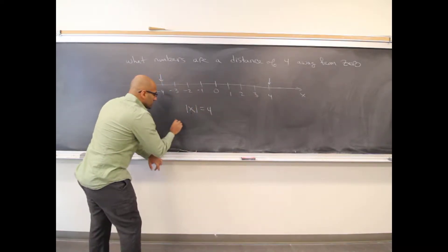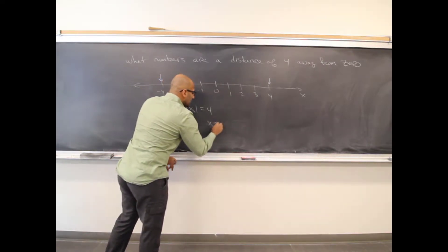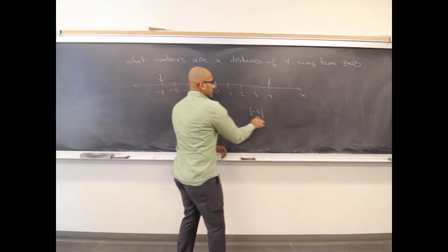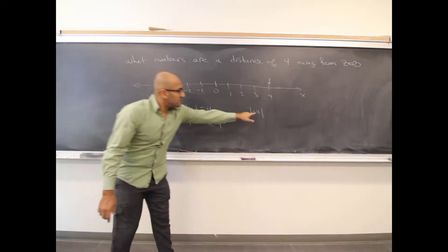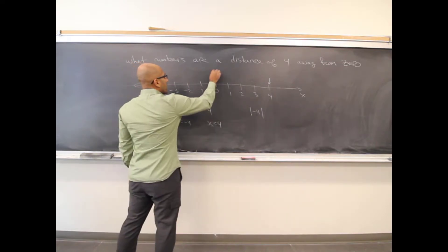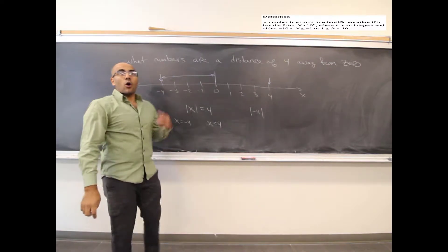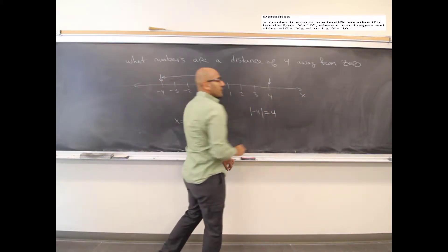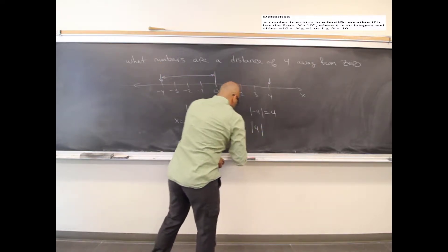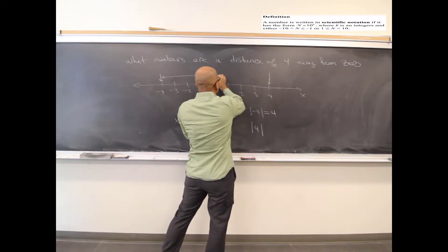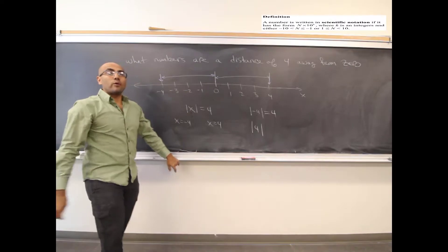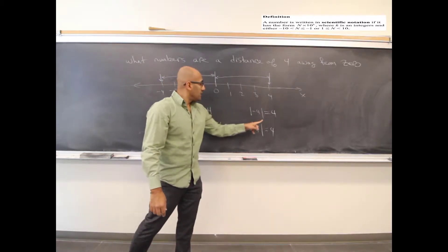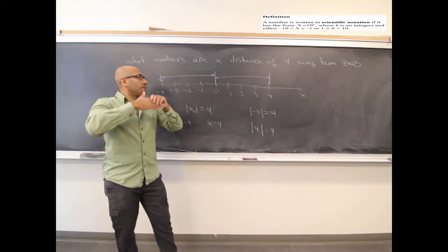The possible values are x equals negative 4 and x equals positive 4. When you see the absolute value of negative 4, it's asking for the distance that value is from 0. Distance is always positive, so the answer is 4. Likewise, the absolute value of positive 4 asks for the distance 0 is from 4, which is also 4. The absolute value of negative 4 is 4, and the absolute value of 4 is 4.